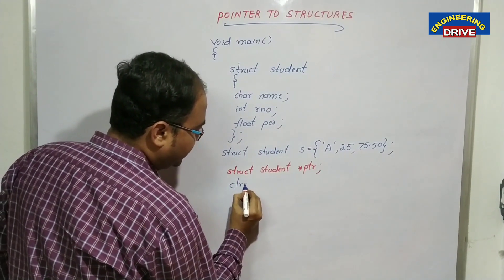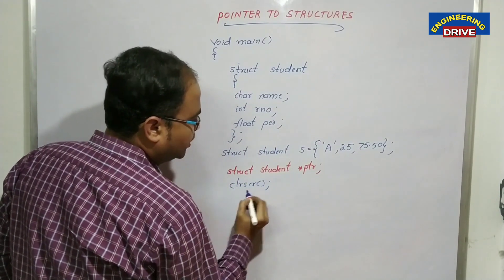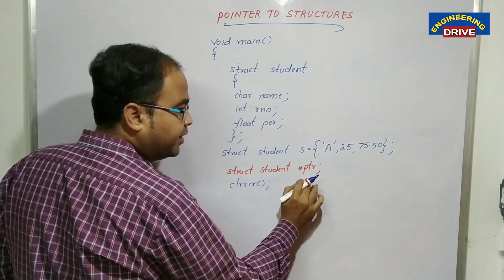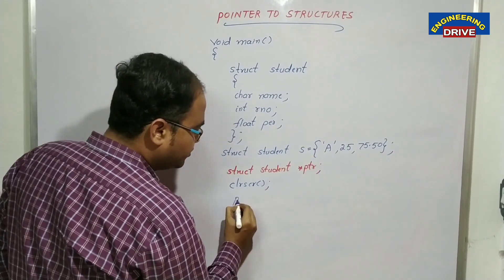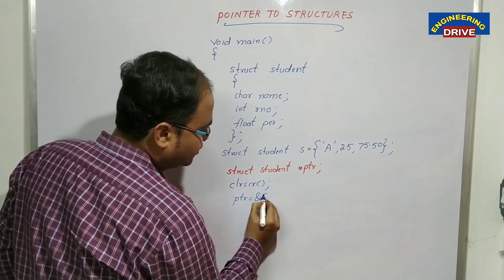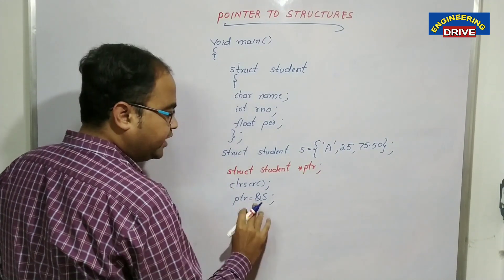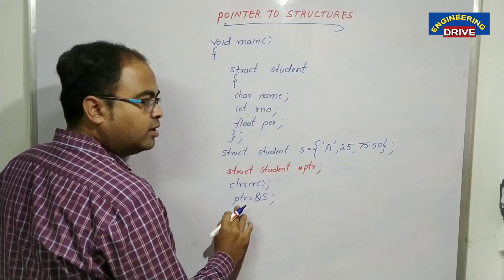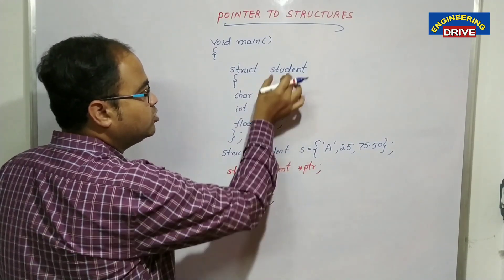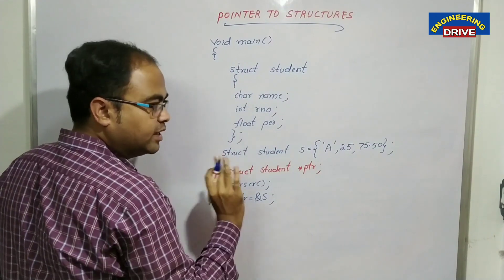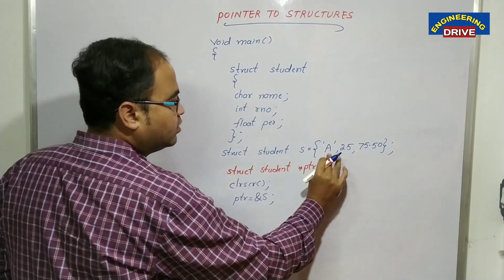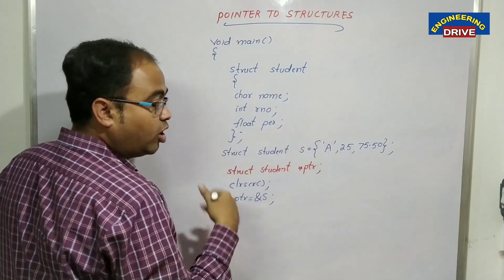To clear any previous output we can use clrscr(). Now I want to store the address of the structure variable in ptr, so I write: ptr = &s. So the address of a structure can also be stored in a pointer — that pointer must belong to the same structure, which is the student structure. That is the condition.